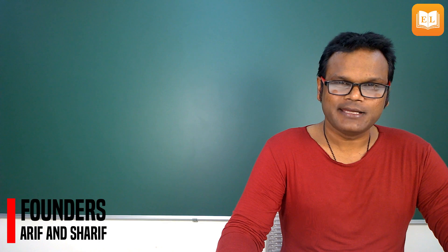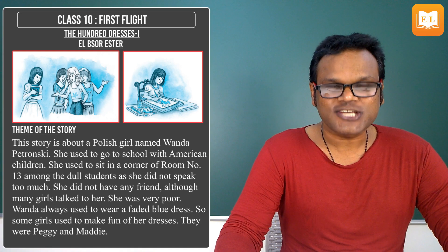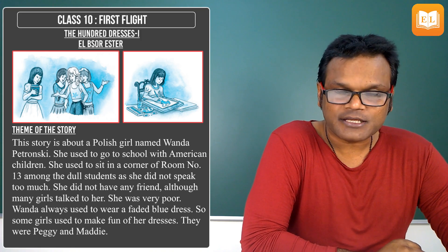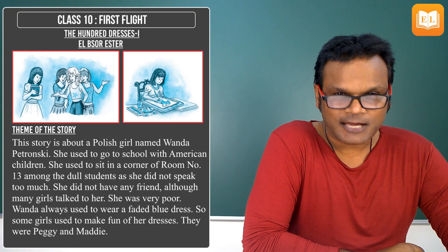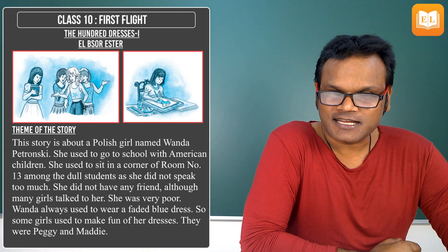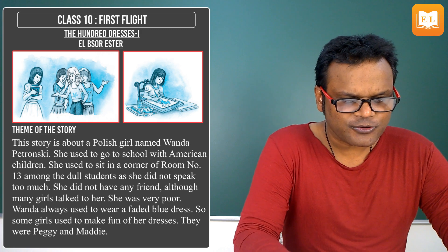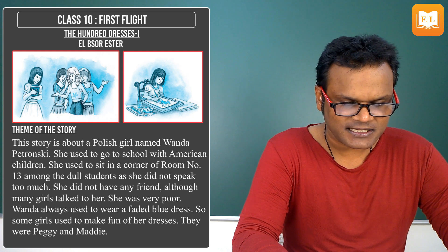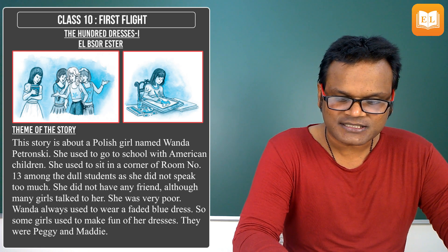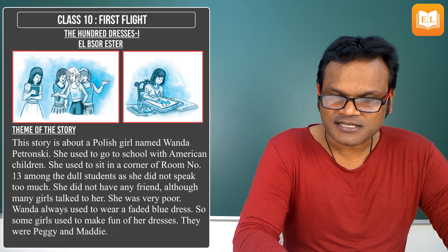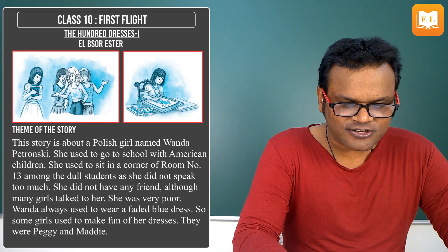Hello students, welcome to E-Learning. I'm Alok. Today we have the chapter 'The Hundred Dresses'. This chapter is in two parts. The first one is the theme of the story. This story is about a Polish girl named Wanda Patronoski. She used to go to school with American children. She used to sit in a corner of room number 13 among the dull students, as she did not speak too much.